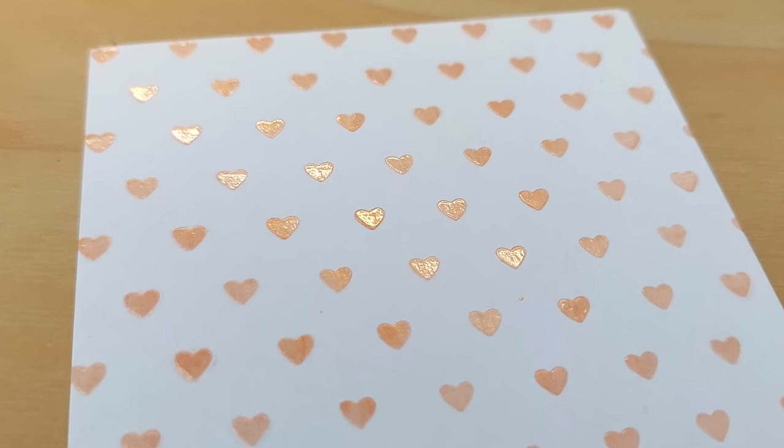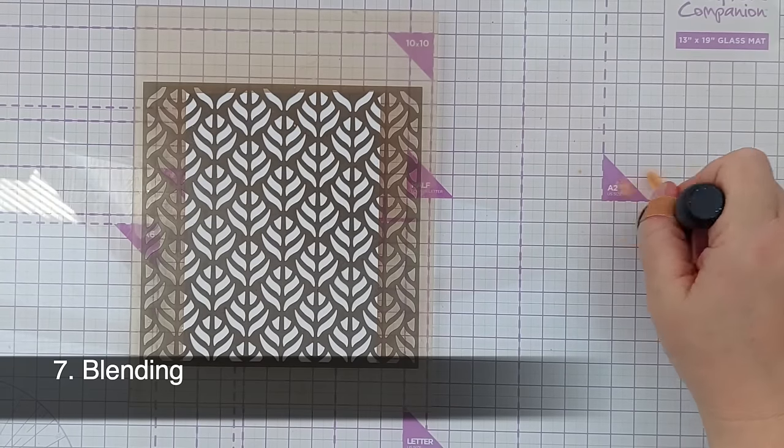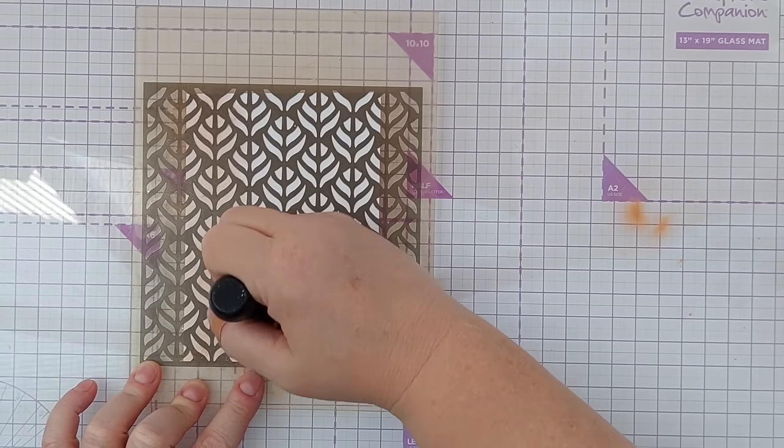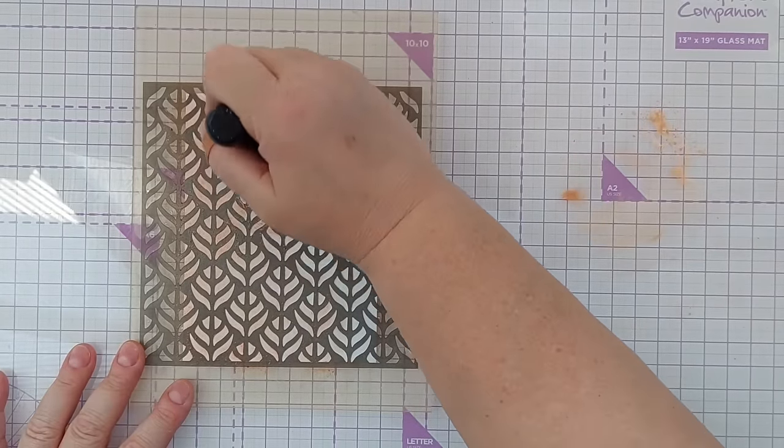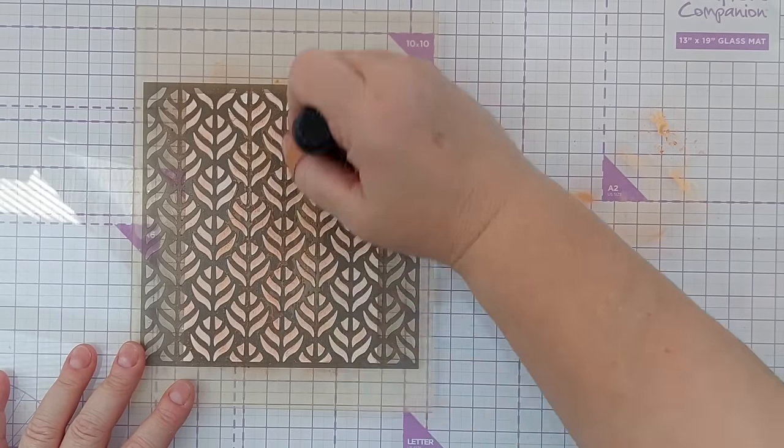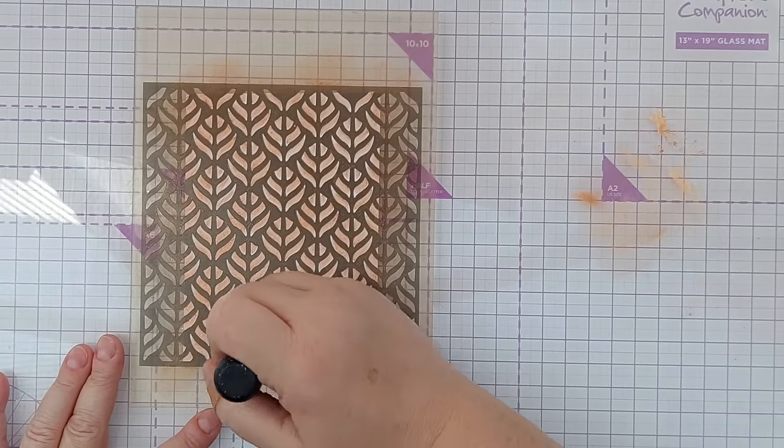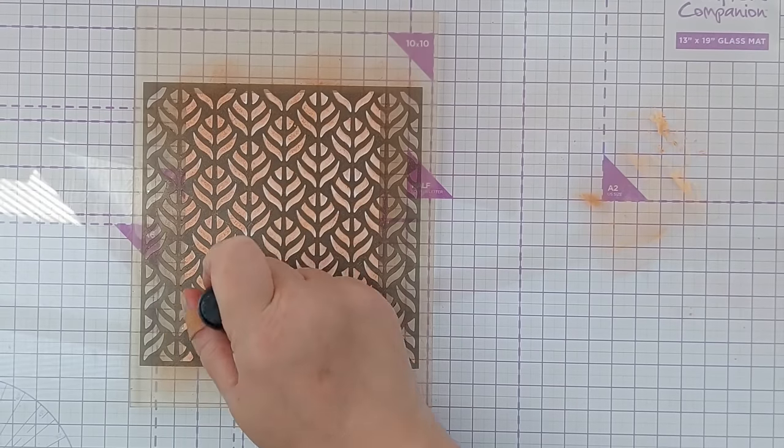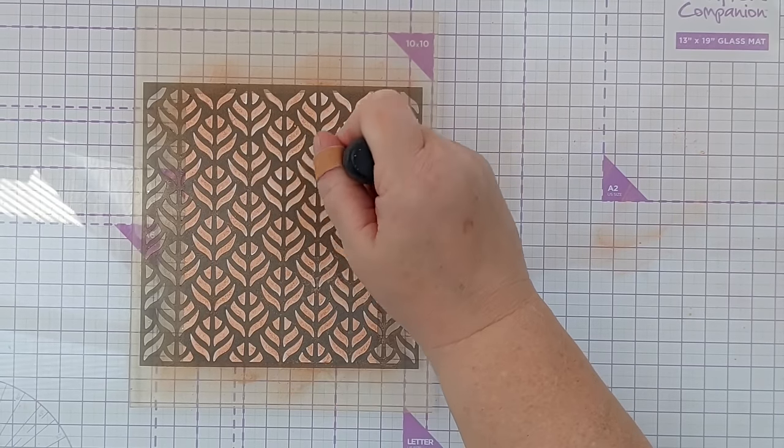For technique number seven I did some blending. I sprayed my stencil again with stick and spray to stop my shimmer spray seeping under the stencil. I just took a domed sponge blender, picked up some of my spray and then blended it as I would any ink through my stencil. I think having the spray and stick on the stencil really does help with something like this because I'm blending with something that's quite liquidy. If I put too much pressure on, it really will splurge under the stencil. And that's a look if that's what you want and that's fine, but if you're looking for a nice neat stenciled image then I'd recommend something like spray and stick.